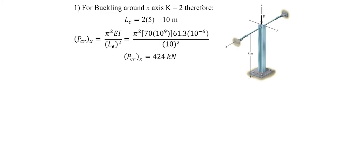Due to the bracing on top of this column, the support conditions vary depending on the axis of buckling. If the column buckles around the X axis, then K equals 2, as the top is free in the Y direction and the bottom is fixed. The effective length LE equals 2 times 5 equals 10 meters. Using the Euler equation, the critical load about the X axis equals 424 kilonewtons.